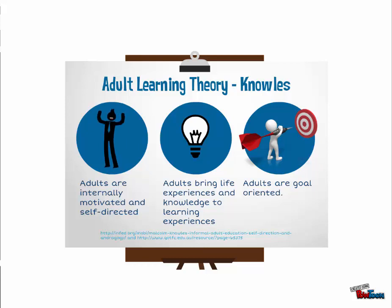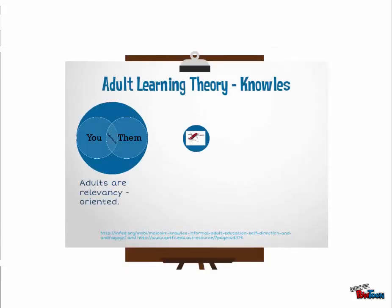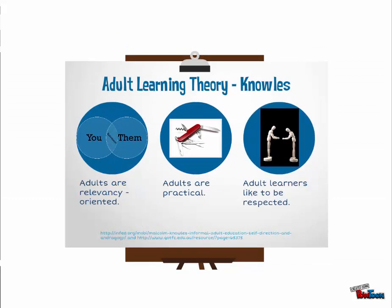Here are some basic learning principles first described by Malcolm Knowles in the 1970s. First, adults are internally motivated and self-directed. Second, adults bring life experiences and knowledge to learning experiences. Third, adults are goal-oriented. Fourth, adults are relevancy-oriented. Fifth, adults are practical. And finally, adult learners like to be respected. These are general principles, and there will be adult learners in your class who do not exhibit all of these traits.